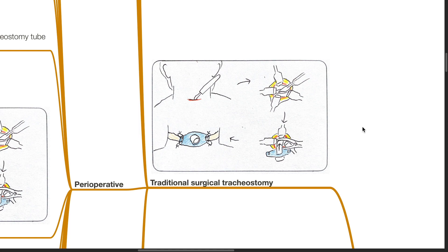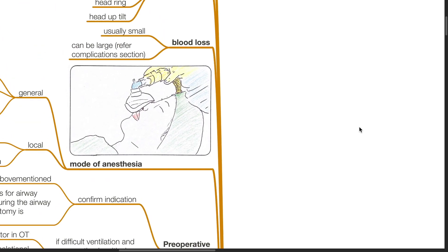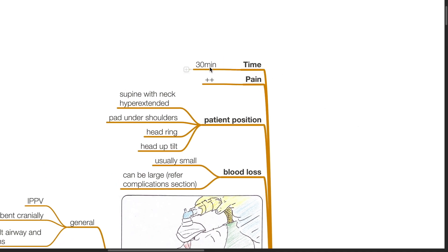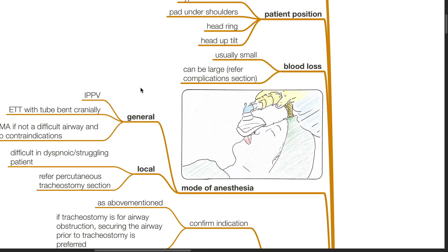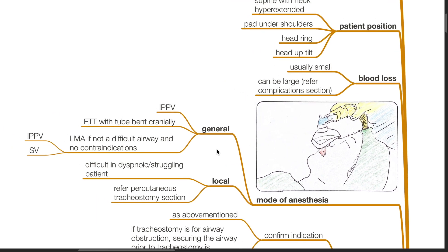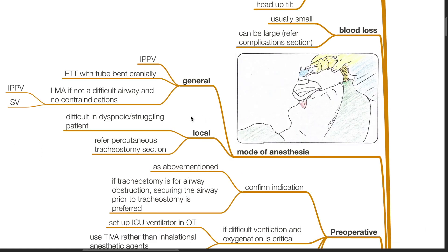Traditional surgical tracheostomy usually lasts 30 minutes; pain is moderate. Patient position: supine with the neck hyperextended, with pads under shoulders, head ring, and head-up tilt. Blood loss is usually small but can be large. Mode of anesthesia can be either general or local. For general anesthesia: IPPV, ETT with tube bent cranially, or LMA if not a difficult airway and no contraindications, followed by IPPV or spontaneous ventilation. Local anesthesia is difficult in dyspneic and struggling patients.